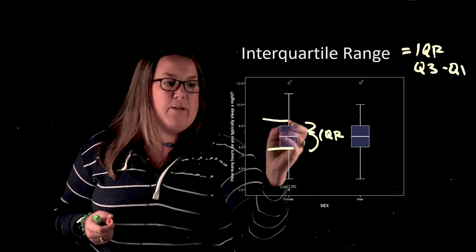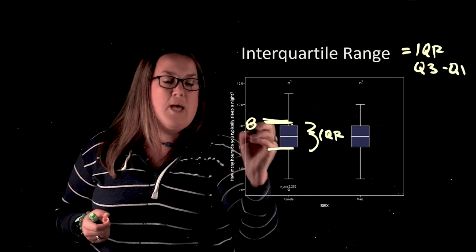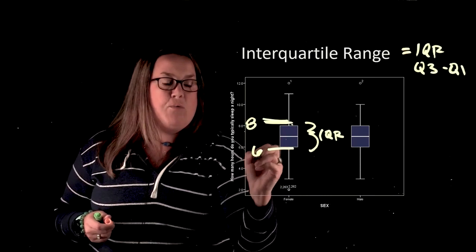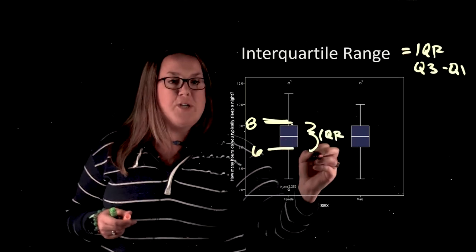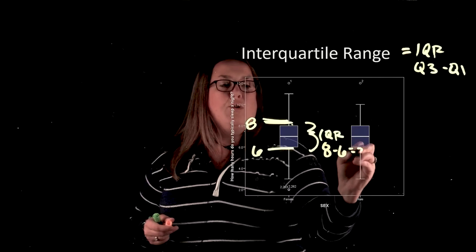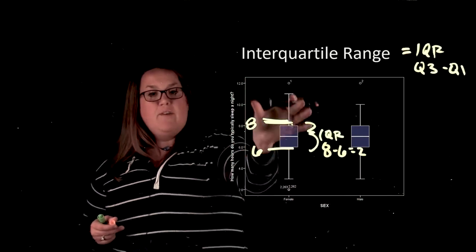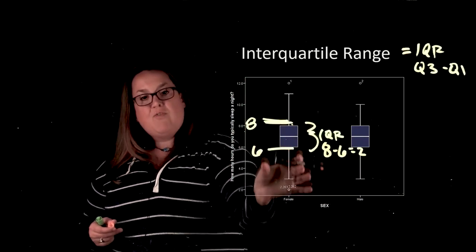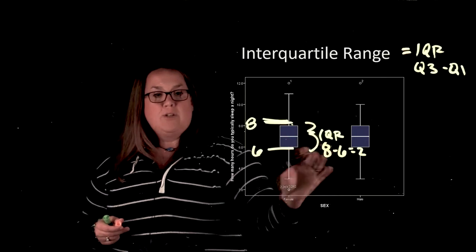So here I would have approximately, I drew that line a little high, but that would be eight for Q3, and here Q1 would be six. So my interquartile range for females would be eight minus six or two. That means that 50% of my female students are in that range, that range of two.